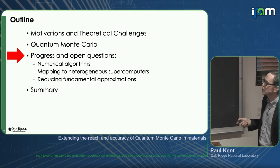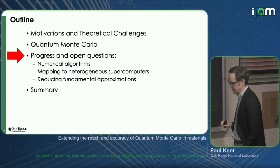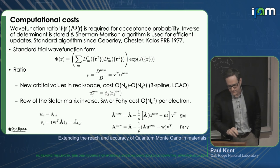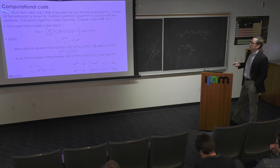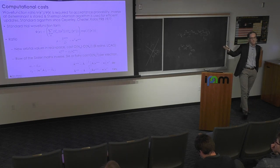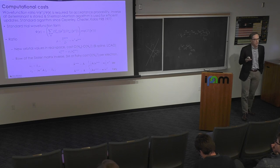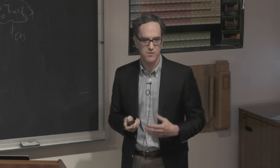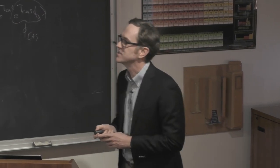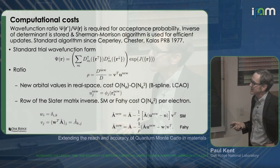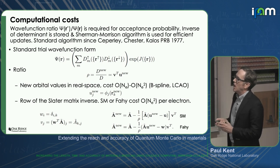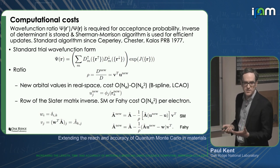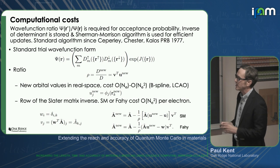That brings me to advances in our numerical algorithms. Let's start by thinking about where the computational costs come from. We're going to look at the cost of computing the ratio of the wave function with one electron moved — we have to evaluate this during the Monte Carlo, and many other properties have similar ratios. The trick in Monte Carlo is to make this very fast and efficient. The key trick that's been standard for 40 years, since at least 1977, is that we store an inverse of a determinant and update it using the Sherman-Morrison algorithm. N-cubed scaling comes from this.